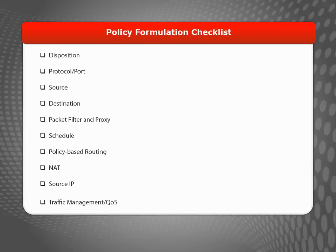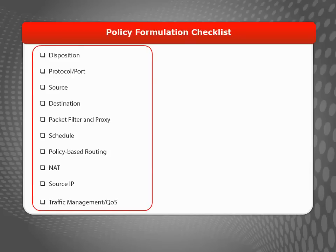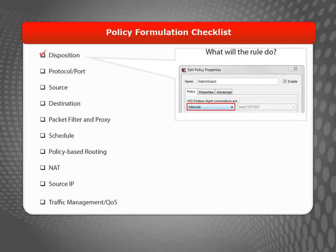Before I show you how to create a new policy, let's review a checklist of the things you need to know to make sure your policies work as expected. The first thing you need to know is what you want the rule to do — is it going to allow or deny certain packets in your network? When you configure your device, the default stance is to deny connections that have not been explicitly allowed. You might want to add an explicit deny if, for example, you want to deny connections some of the time or for some of the people, but not all of the time for all of the people — then you can add a policy for those connections and set the disposition to deny.